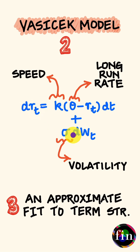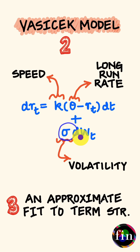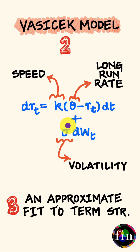This is a very simple process. It relies on only three model parameters, which are respectively the speed of mean reversion, the long-run rate to which mean reversion happens, and a constant volatility sigma. Given we only have three model parameters in this model, we actually lack the flexibility to exactly match the term structure of interest rates.